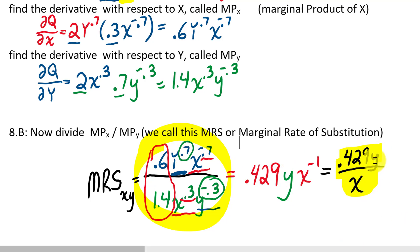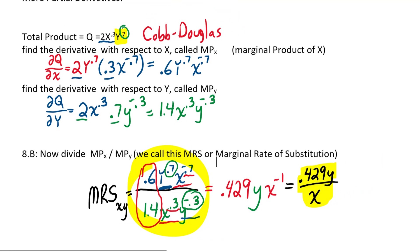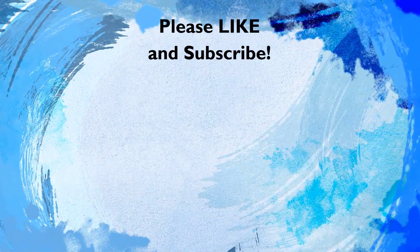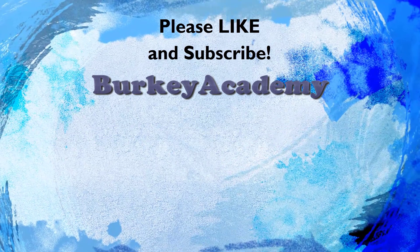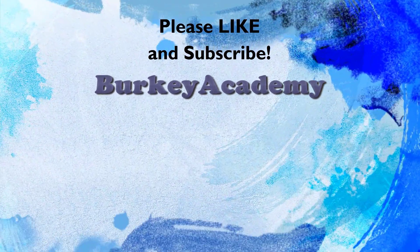That is a nice simple-looking equation compared to what we started with. A lot of the equations we work with will start from a very complex beginning but become very simple after simplification. That is an introduction to partial derivatives: we're just changing one variable at a time, asking what's the rate of change or slope while holding everything else constant. We treat the variables we're not differentiating as constants. We'll look at more examples later — if you have any questions, let me know.